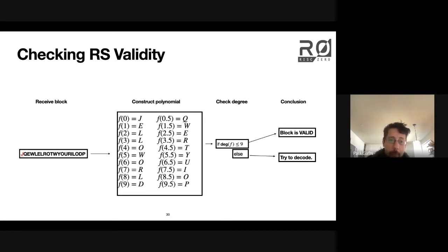In this case, when Bob receives this block, this is not actually going to create a degree less than or equal to 9 polynomial. When Bob runs this interpolation, because there was an error here, he's going to end up with something that's like degree 19, presumably.